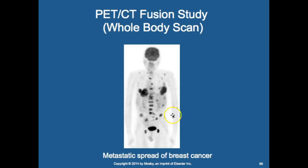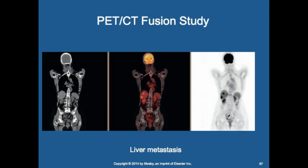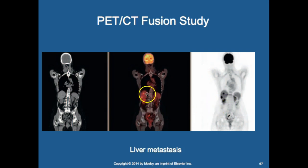In a fusion whole-body study for metastatic spread of breast cancer, we take the CT scan and the nuclear medicine scan and fuse them together to see hot spots within the liver. When it's hard to tell exactly where disease is, we can scroll through the CT to see the extent of disease within the liver. And that concludes the nuclear medicine lecture.